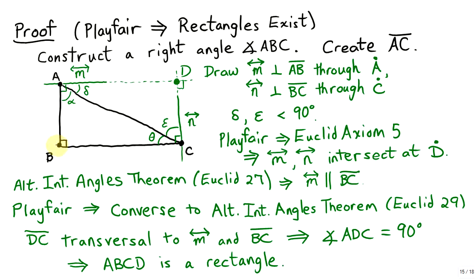Next, by the Alternate Interior Angles Theorem, since line M and the line through B and C have alternate interior angles that are both right angles and therefore equal, this implies that line M is parallel to line BC. Furthermore, we have earlier shown that Playfair's axiom implies the converse to the Alternate Interior Angles Theorem — that is Euclid's proposition 29. This theorem says that given two parallel lines and a transversal which cuts them, the alternate interior angles must be equal. Therefore, the angle at D must also be a right angle, and so quadrilateral ABCD has all four angles as right angles — therefore ABCD is a rectangle.